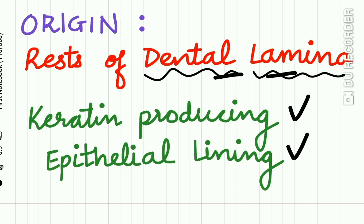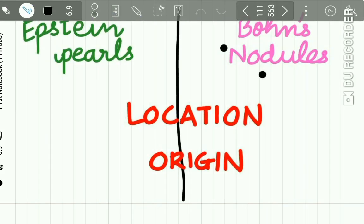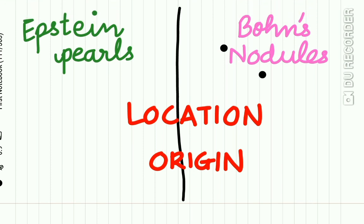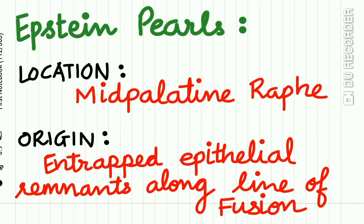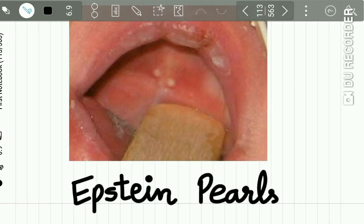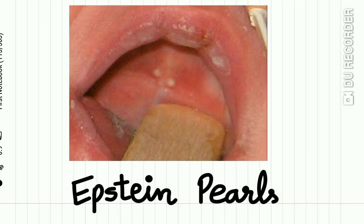These cysts contain a keratin-producing epithelial lining. Epstein pearls and Bohn's nodules are similar lesions but differ in their location and origin. Epstein pearls are located in the mid-palatine raphae area, and their origin is from entrapped epithelial remnants along the line of fusion. Here is a picture of an Epstein pearl present at the mid-palatine raphae area.